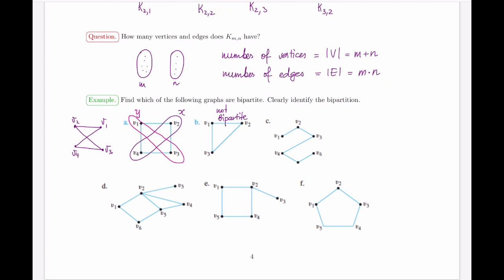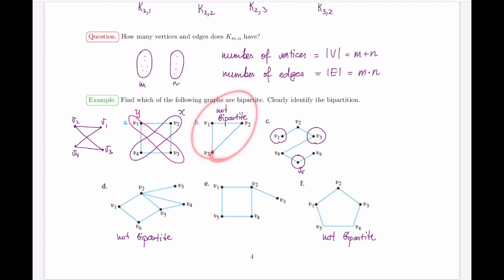For the path graph, one set X can be {v1, v3, v5}, and you can verify this is a valid bipartition. For certain other graphs, they are not bipartite — you can find a triangle-like structure showing you cannot divide the vertices between two parts with no edges within each part. Similarly, another graph shown is also not bipartite.